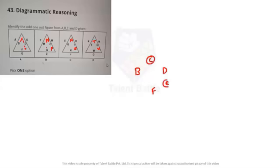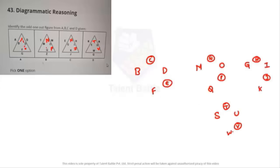Identify the odd one out figure from A, B, C, and D. We have four figures; one is different from the other three. Inside the triangles we have letters: D, F, M, O, Q, G, I, K, S, U, W — these are near to each other. B, C is missed; D, E is missed — so one alphabet is getting skipped in between each pair.